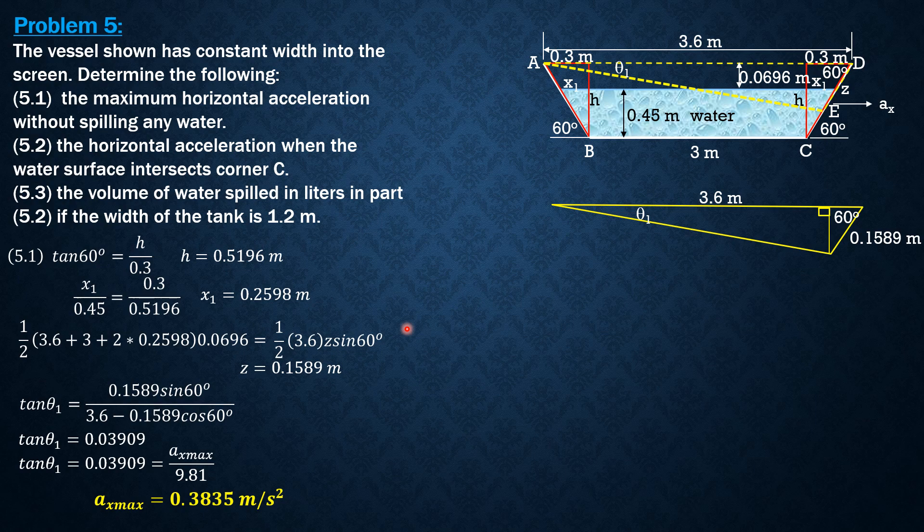So this is the maximum horizontal acceleration so that no water will be spilled. Then the horizontal acceleration when the water surface intersects corner C.